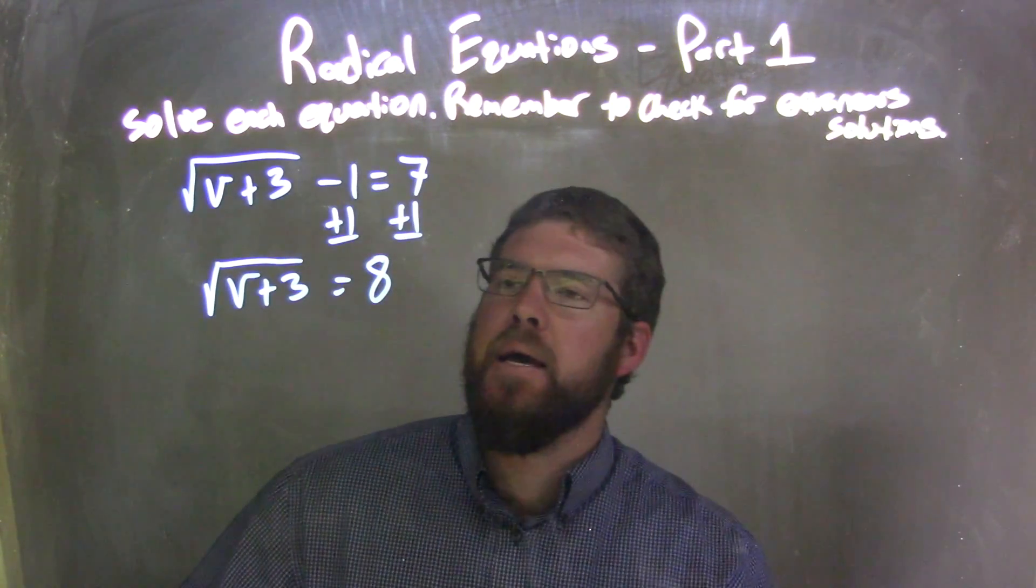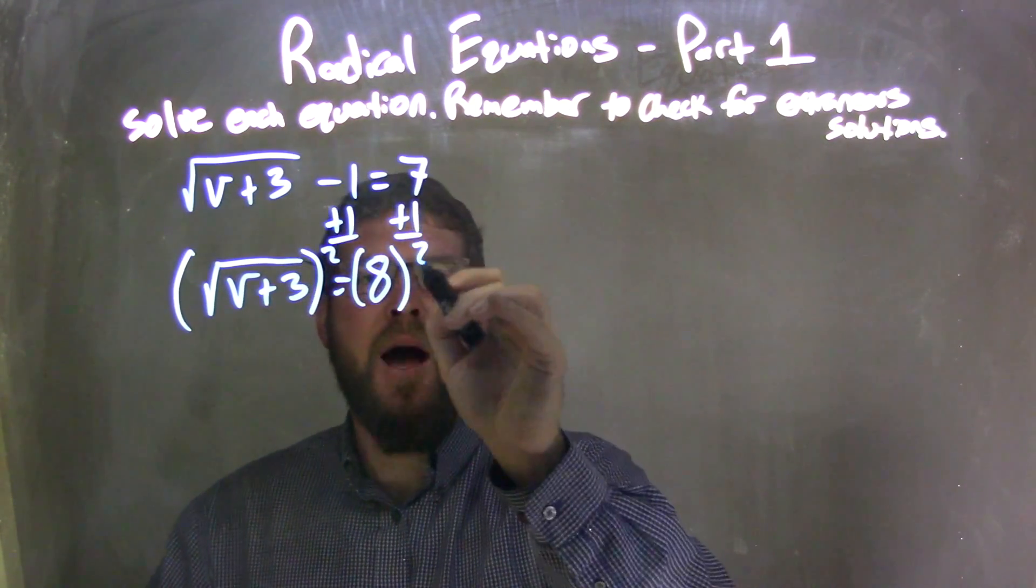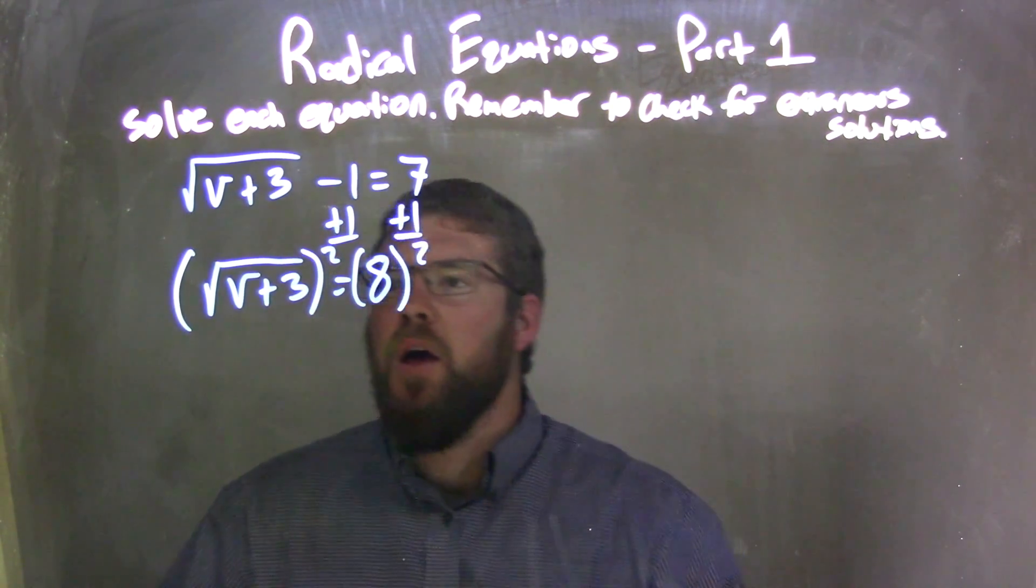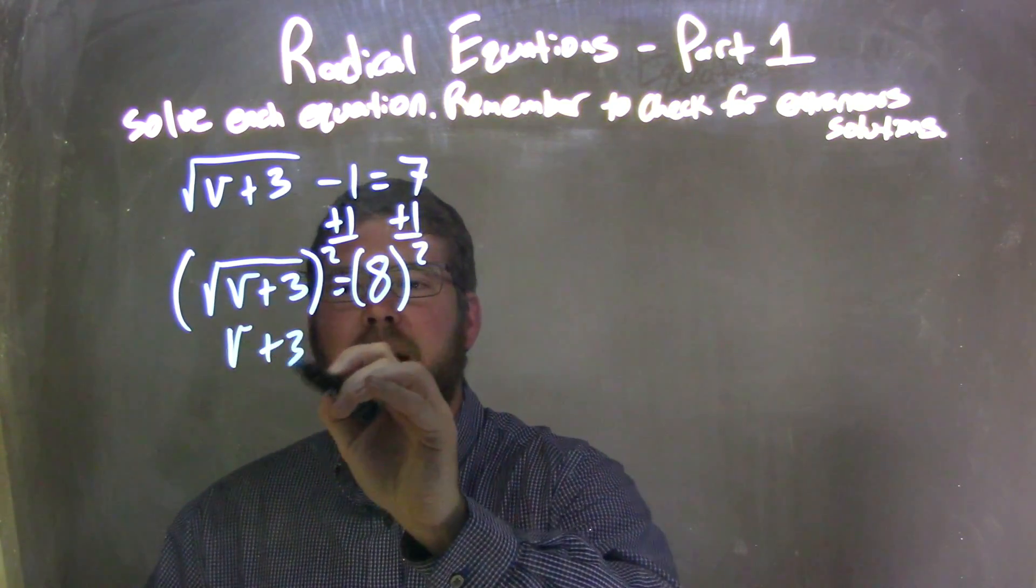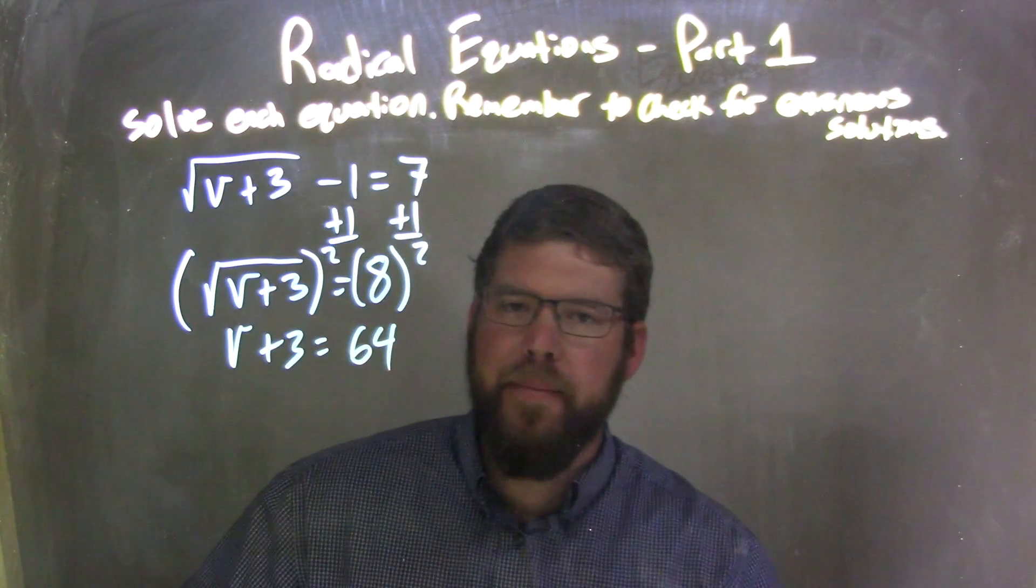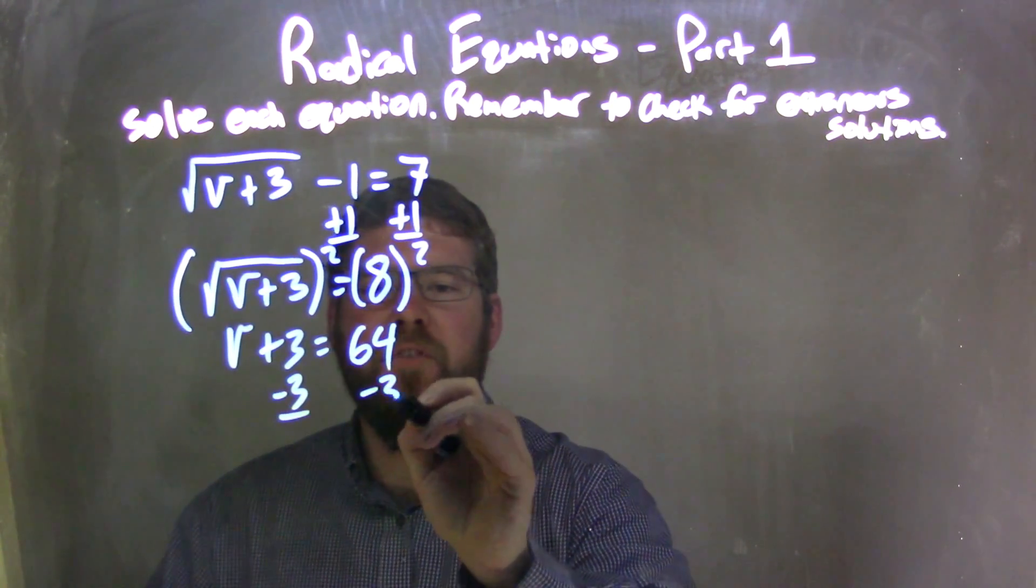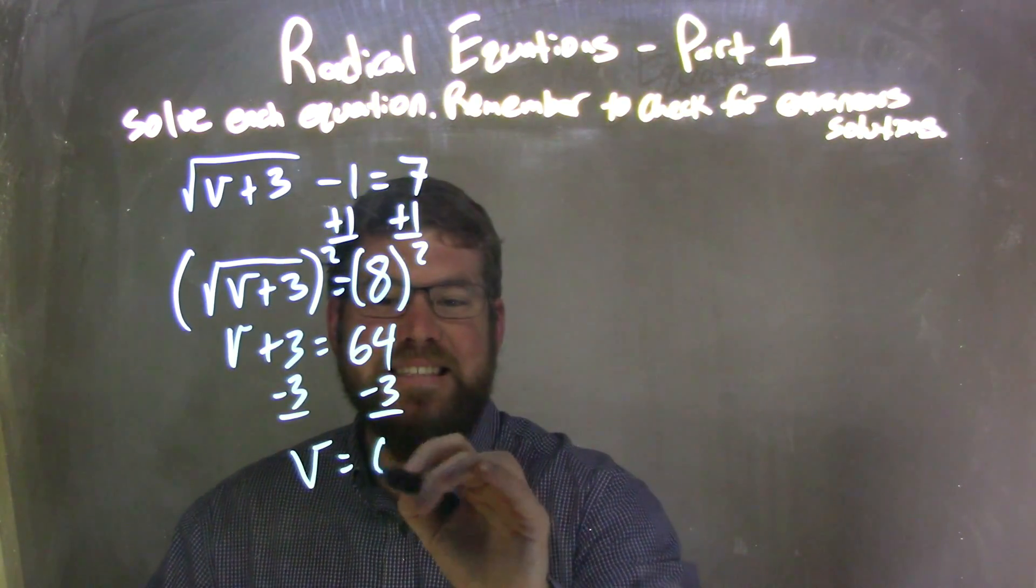From there, I have to eliminate the square root, so I'm going to square both sides. That's the opposite operation of square root. This leaves me with just v plus 3 on the left, and 8 squared is 64 on the right. I then subtract 3 from both sides to get v by itself. So v equals 64 minus 3, which is 61.